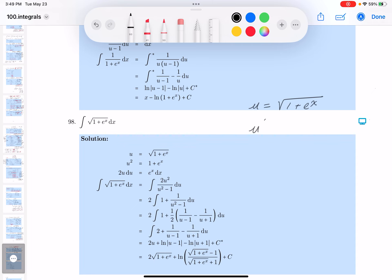What's u squared going to be? It's going to be 1 plus e to the x. You can get 2u du equals e to the x dx. That's not so bad. Let's see if we can plug it in. Bottom line, can we plug that in? Let's see what we get.